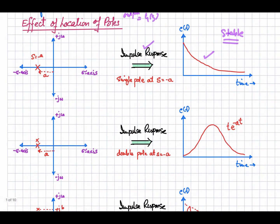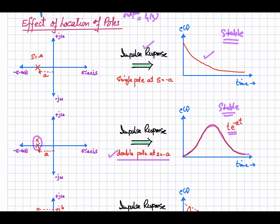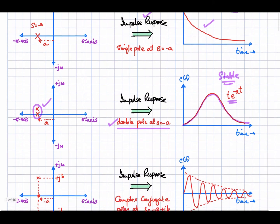Now if we have two poles at the negative real axis overlapped at the same position — a double pole at s equal to minus a — the impulse response is given by t times e raised to the power minus at. If we sketch that, the response is again bounded with a finite value; it is not ever-increasing. So this system is also stable.